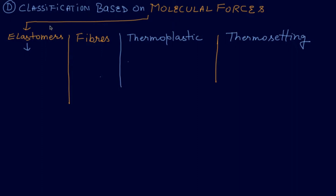One of the classifications based on molecular forces includes elastomers, fibers, thermoplastic, and thermosetting polymers. This classification has been asked in previous questions. Elastomers are actually rubber-like and they have weak forces, which can be understood by the word elasticity.